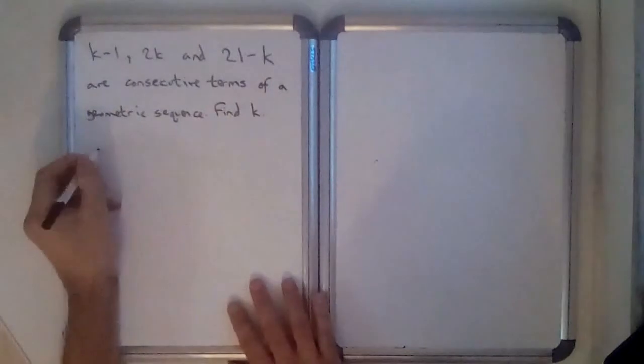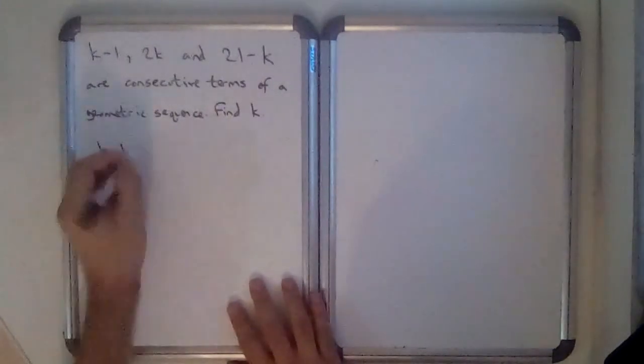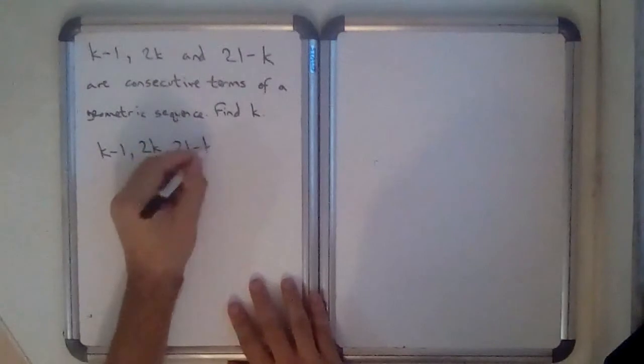Now I'm just going to write those terms out to begin with. So k minus 1, 2k, 21 minus k.